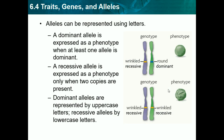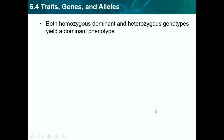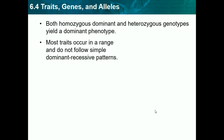Here's another example. This is our genotype — we have a wrinkled allele and a round allele, and the round is dominant. So in this phenotype, our round allele is dominant and we have at least one of that. In this phenotype it's wrinkled, so we have to have two wrinkled alleles — both of them are wrinkled. Both homozygous dominant and heterozygous genotypes yield a dominant phenotype. Most traits occur in a range and do not follow simple dominant-recessive patterns — this is just the simplest you can get, but not everything follows this pattern.